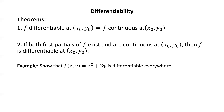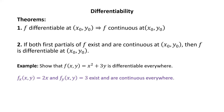As an example, let's redo the last example using Theorem 2 instead of going through that whole procedure. Pause the video, answer this question, and then resume the video to check your answer against mine. We want to show that f(x, y) equals x² + 3y is differentiable everywhere. The partial of f with respect to x is 2x and the partial of f with respect to y is 3. These partials exist everywhere and are continuous everywhere, so the result follows immediately from Theorem 2.